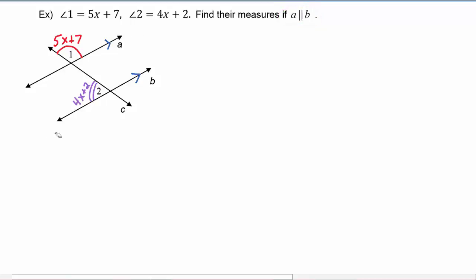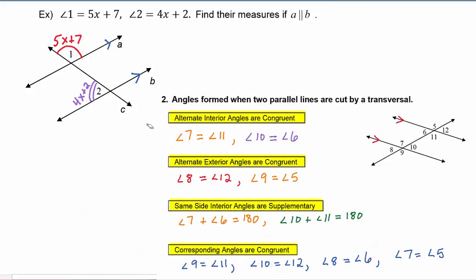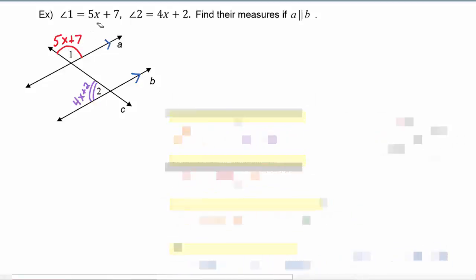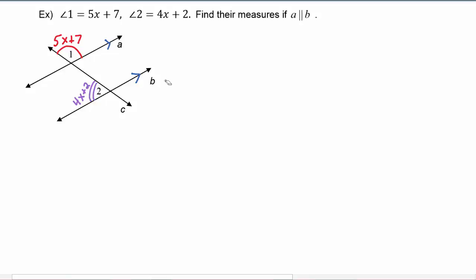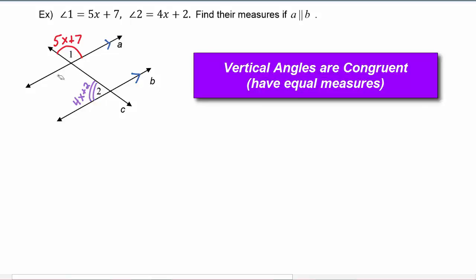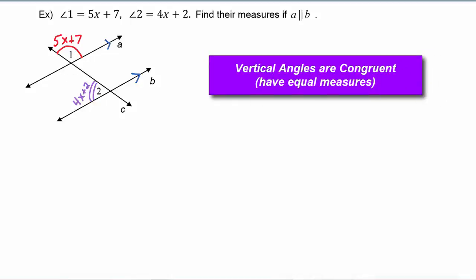Once these two lines are parallel and cut by a transversal, those four special angle pairs from geometry become true. We notice that angle 1 is an exterior angle because it's outside the parallel lines, and angle 2 is an interior angle because it's inside the parallel lines. Using the fact that angle 1 is a vertical angle to the angle directly across, we know that angle is also 5x plus 7.